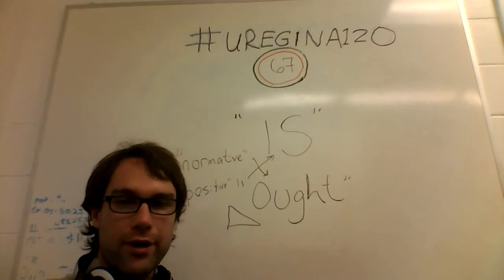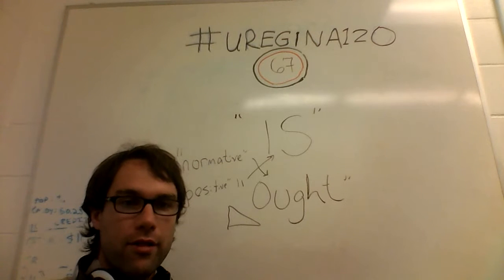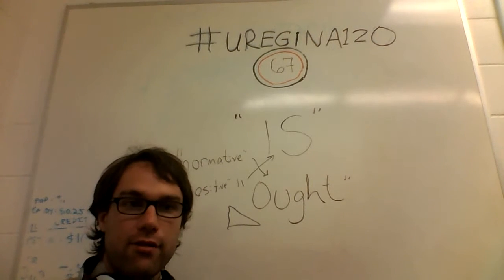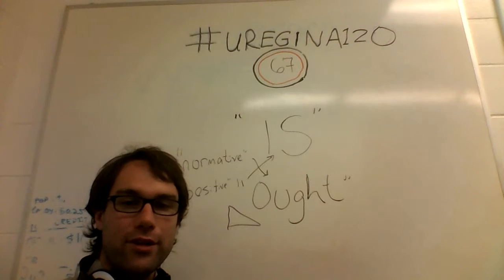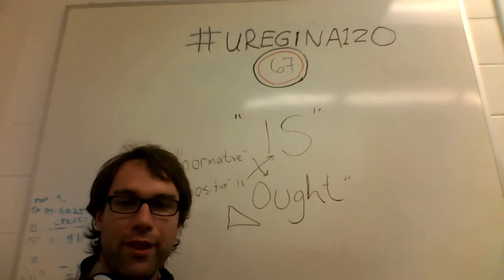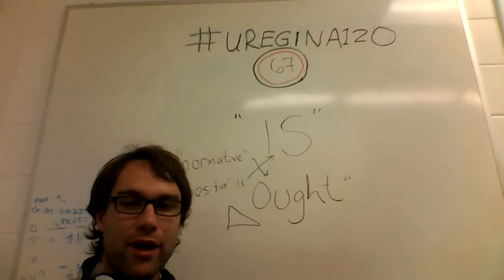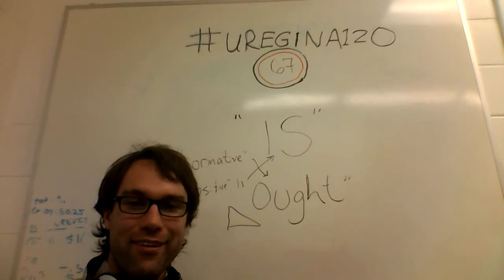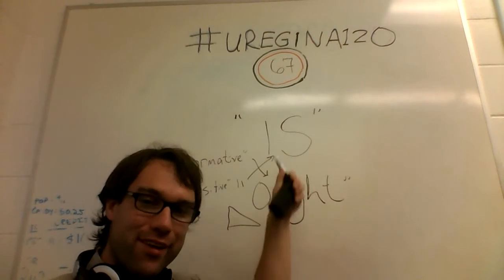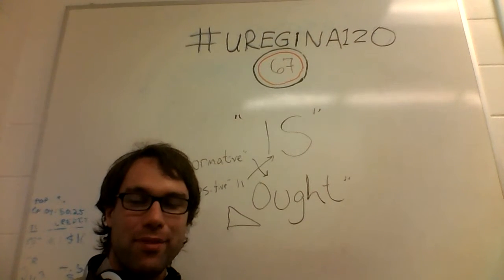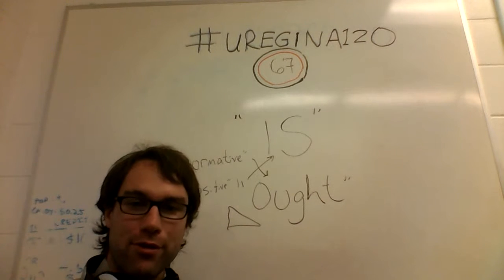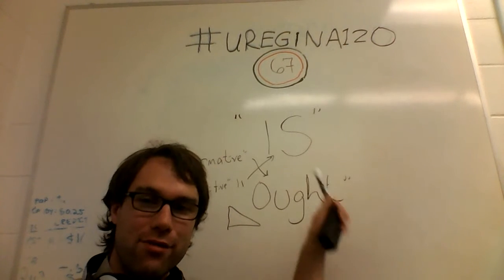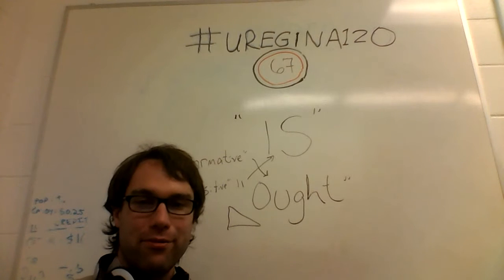Also worth pointing out: as with the last video, there is an is-ought situation involving the is-ought situation itself. It might be worth thinking about what is, or what should we do about the is-ought situation — because that would assume there is some relationship between is and ought, and of course there is not.